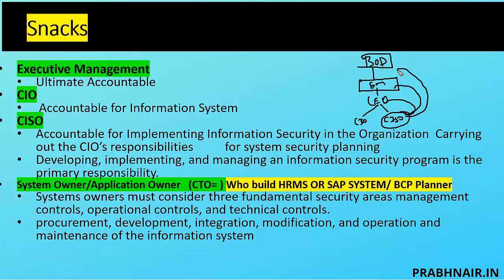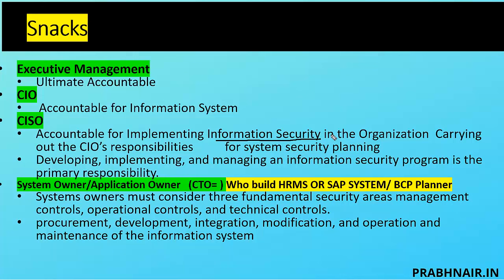The hierarchy is: the board runs the show, they build the executive management team, executive management decides the CEO, and under CEO we have CIO or CISO. The CISO should directly report to the CEO or executive management or board, so that independent opinion can be brought forward. If you get a question — who is accountable for implementing information security in the organization — the answer is CISO. As shown in the diagram, it is clearly mentioned: accountable for implementing information security, carrying out the CIO's responsibilities, because CIO has delegated security tasks to CISO.